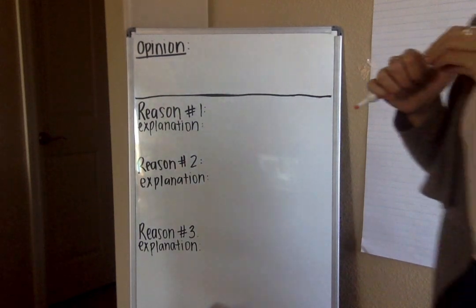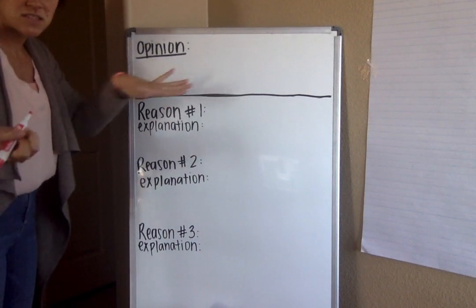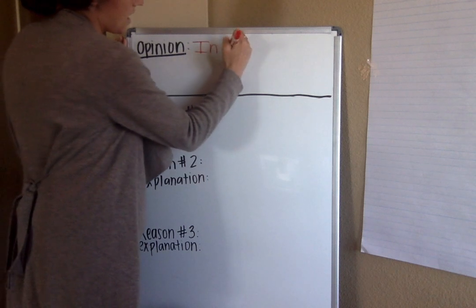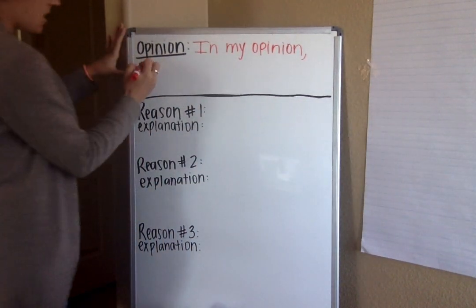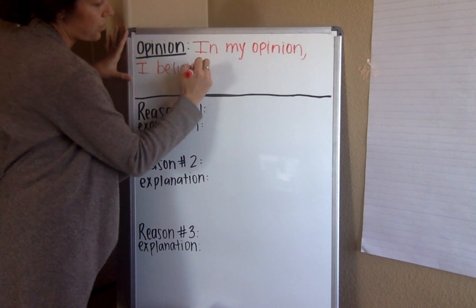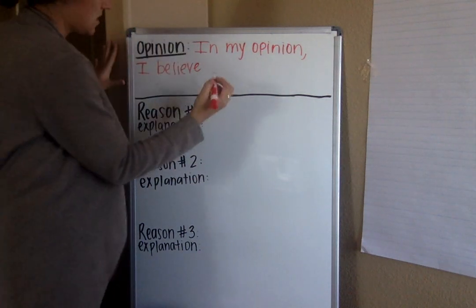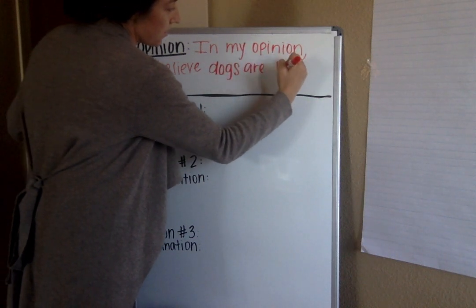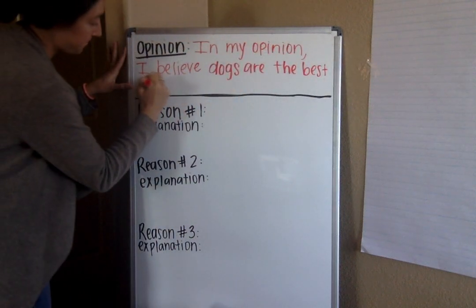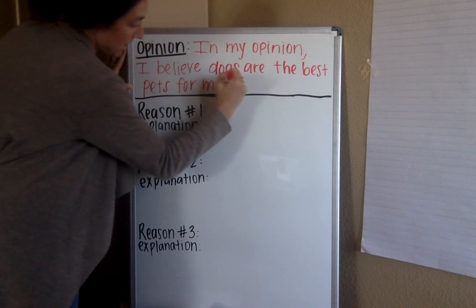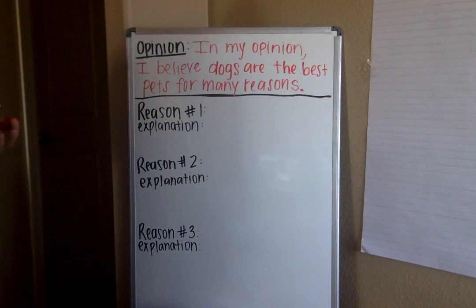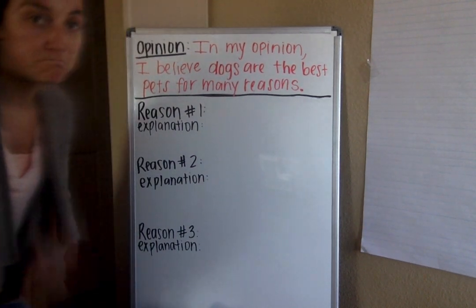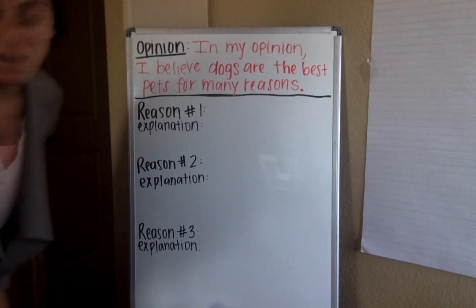To start, I made one on the whiteboard that looks pretty similar to yours — it just doesn't have the cute little picture on it. You need to start by filling in this top portion. You're going to say something along the lines of 'In my opinion,' and then fill in the rest — 'I believe,' or 'I think,' or 'I know,' whatever you want. For example: 'I believe dogs are the best pets for many reasons.' You don't have to choose dogs — whatever you want to choose, you can use. That is what I think is the best pet, so I'm going to go with it.